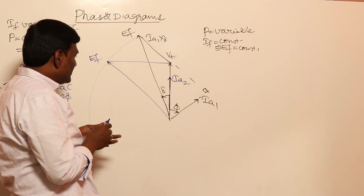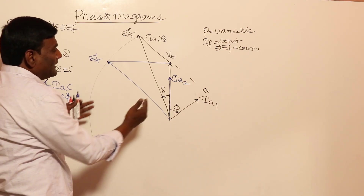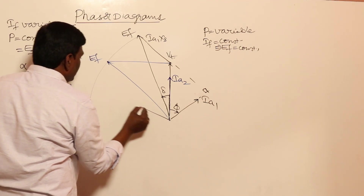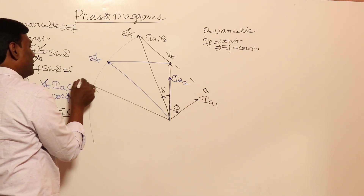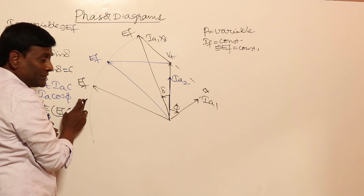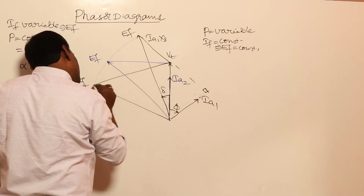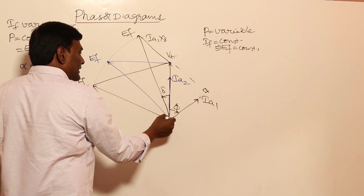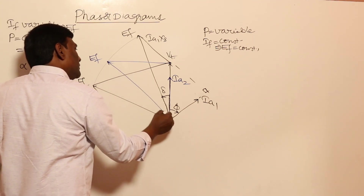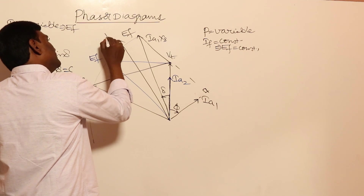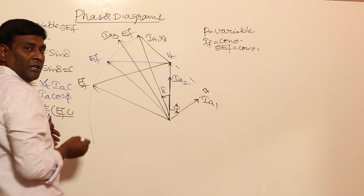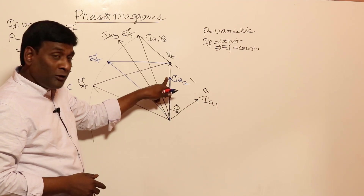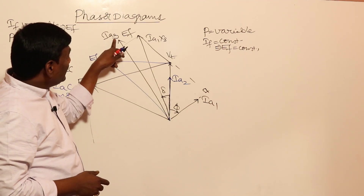If delta increases further to a third position, EF3 has the same length as EF1 and EF2. Ia3 axis is determined, and 90 degrees to it gives Ia3. Now Ia1 cos φ1 < Ia2 cos φ2 < Ia3 cos φ3, confirming that active power increases as delta increases from the first to the third case.